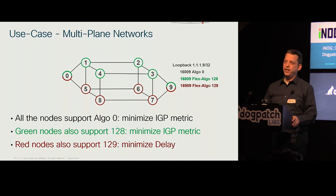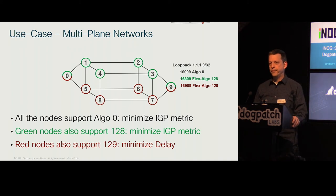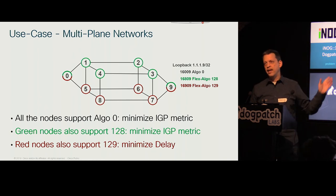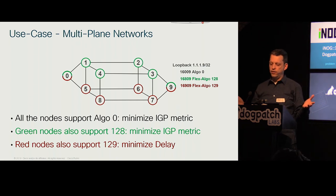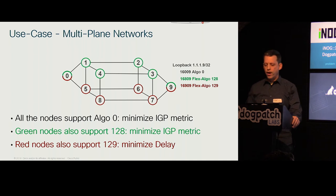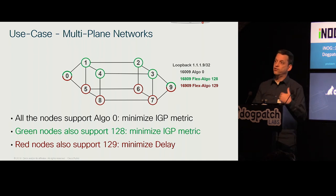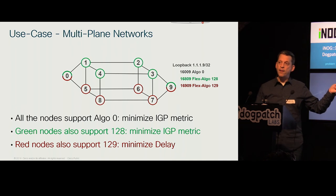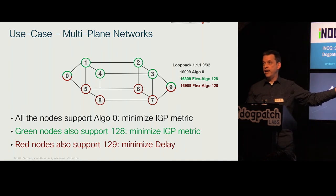Now the use cases — this is where the value becomes clear. The first use case is a multi-plane network. How many of you have dreamt of implementing a multi-plane network that is simple to operate and scalable? With Flex Algo, you have a green plane and a red plane. Algorithm zero is the regular IGP computation for all routers. On the green plane you minimize IGP metric; on the red plane you minimize delay. The algorithm instances are numbered 128 through 255 — these are your Flex Algo ranges.